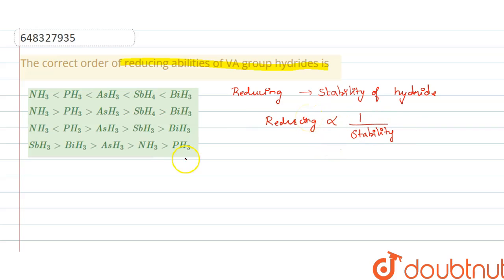The order of the hydride for stability is: NH3, PH3, AsH3, SbH3, BiH3. NH3, that is ammonia, is more stable than any of the hydrides.